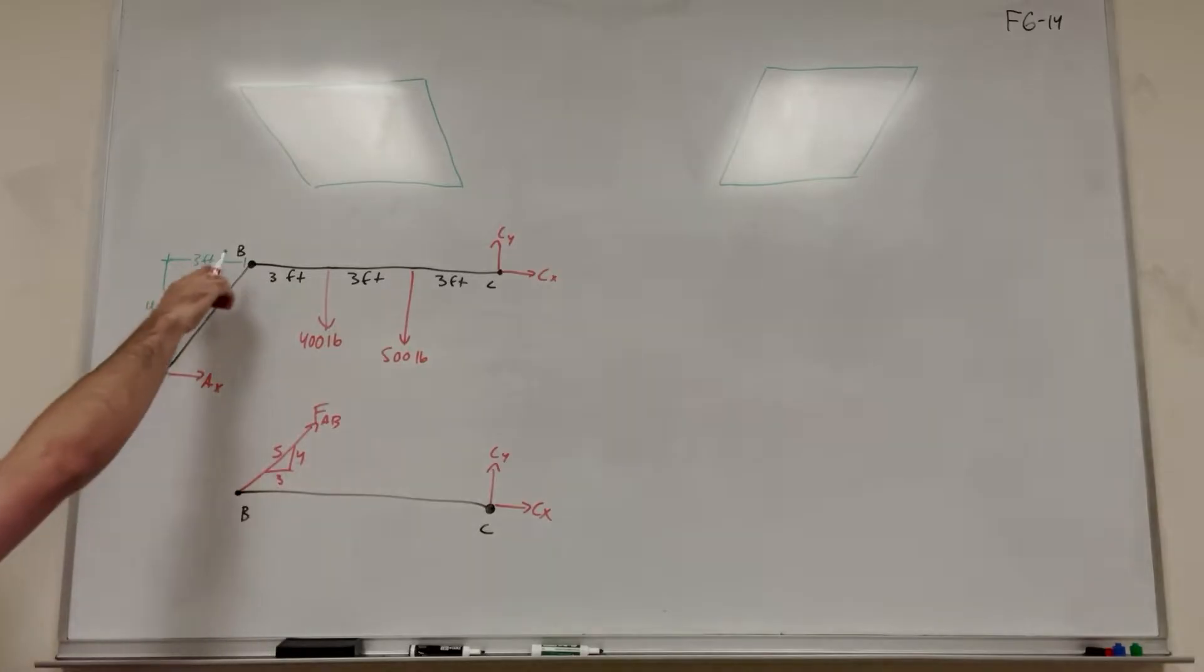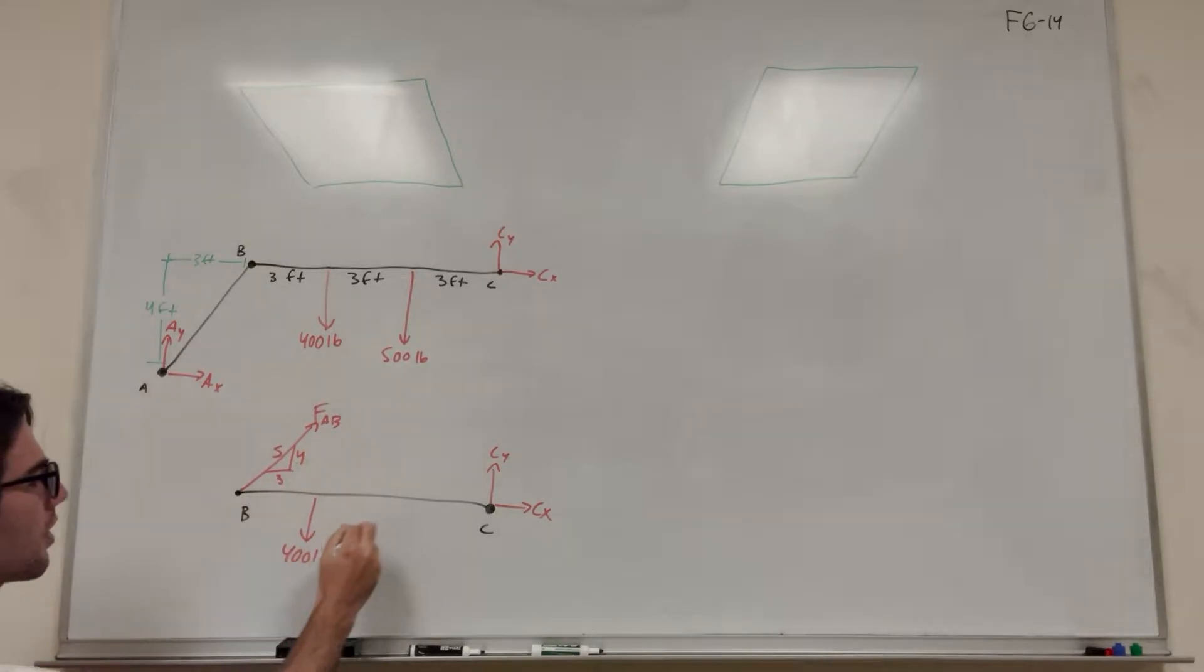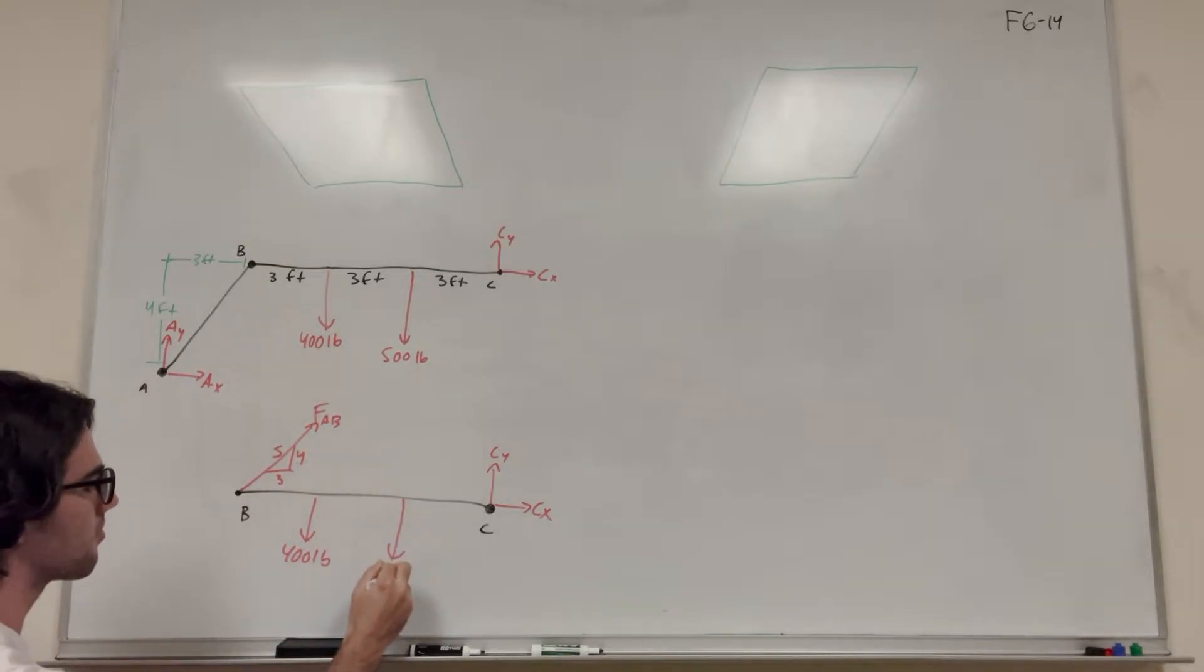Right? Because this triangle is 3, 4, 5. And then we also know that we have our 400 pound force and our 500 pound force. Now we're left with this way easier force body diagram.